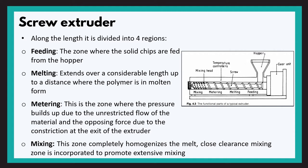The third zone is the metering zone, where pressure builds up and the melt is homogenized. The pressure build-up is due to the combined effect of unrestricted material flow — the drag flow — and the opposing pressure due to constriction at the extruder exit — the back flow. The volumetric flow is governed by this combined effect and the overall output is reduced. The fourth is the mixing zone, where the melt is completely homogenized, with a close-clearance mixing zone incorporated to promote intensive mixing.